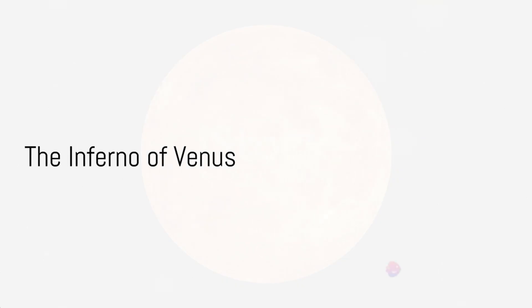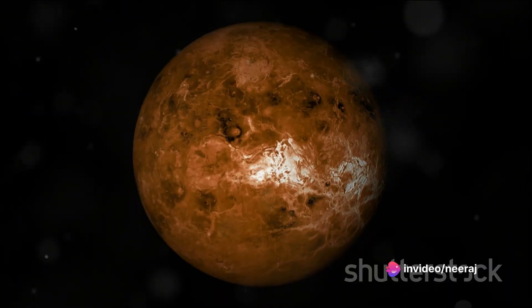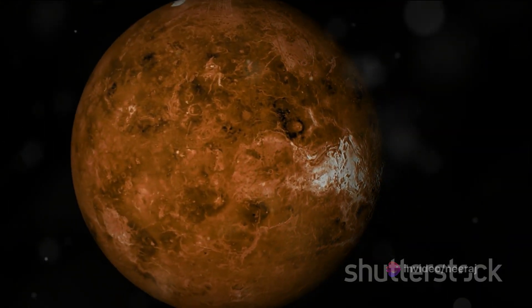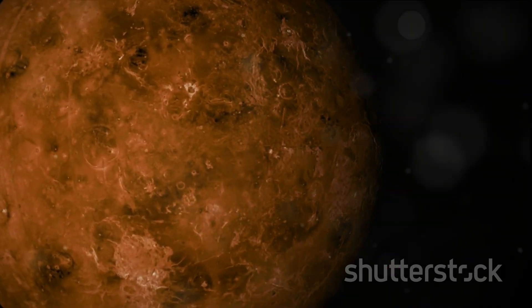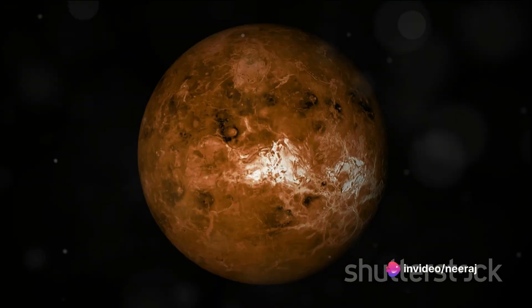When we talk about the surface conditions of Venus, we're entering a world of extremes. It's like peering into a cauldron of cosmic proportions. Venus is a celestial inferno, with temperatures averaging around 865 degrees Fahrenheit. To put that into perspective, that's hot enough to melt lead.